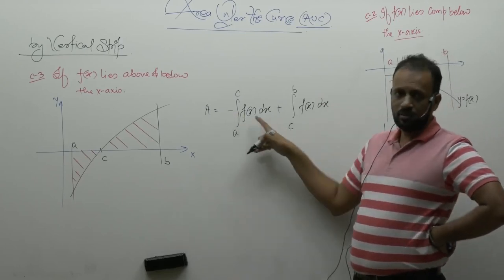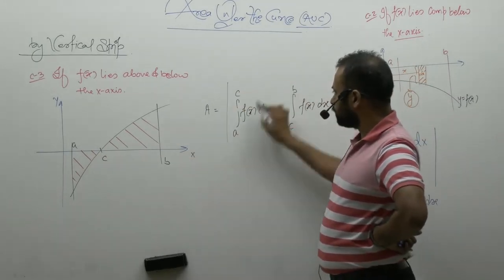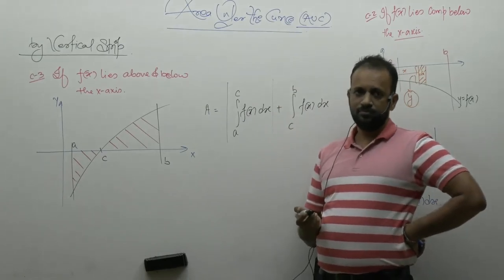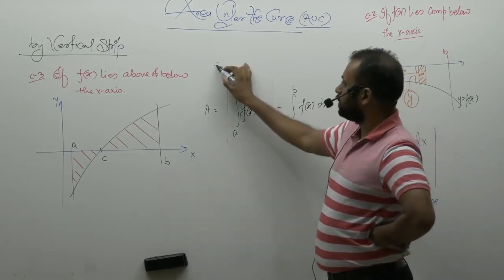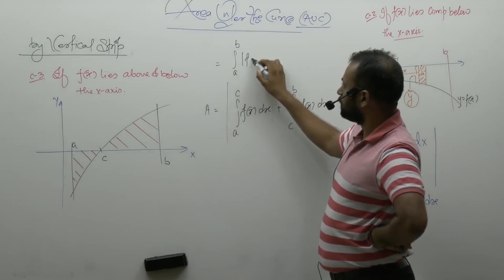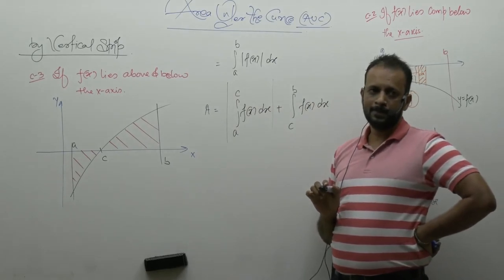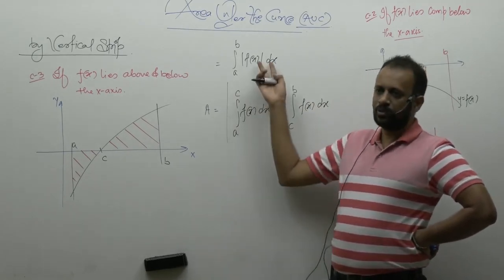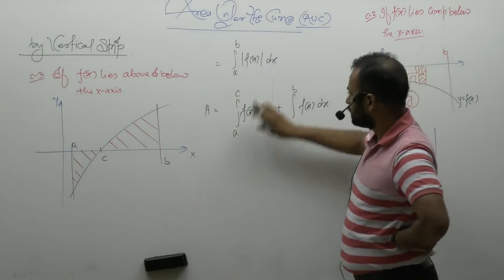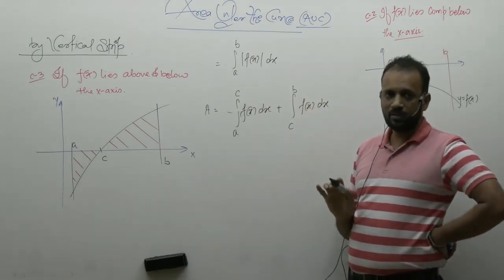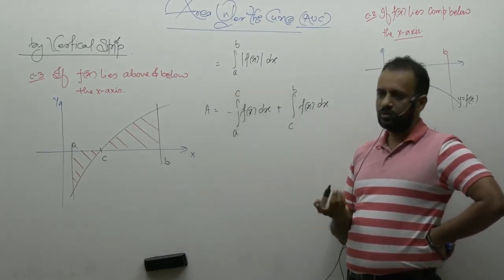Does everyone understand the minus? Since from a to c the area is covered below the x-axis, it is necessary to put minus. If you don't like the minus, put a modulus — it's the same thing. Some people also said: sir, can we just write the whole integral from a to b as |f(x)|dx? Yes — when you define |f(x)|, from a to c you define it as negative, so the minus appears; from c to b you open it as positive. Combining both, you can write it that way.